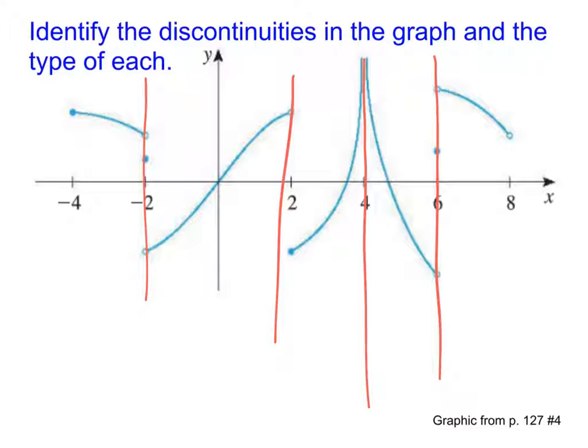Now notice, I did not include negative 4 or 8. Because although I am lifting up my pencil there, it's only because that's the start or the end of the graph. And so if I'm at the far end, that isn't technically called a discontinuity there. It's just where the graphs start. All right, so we've got these four different points along the way.